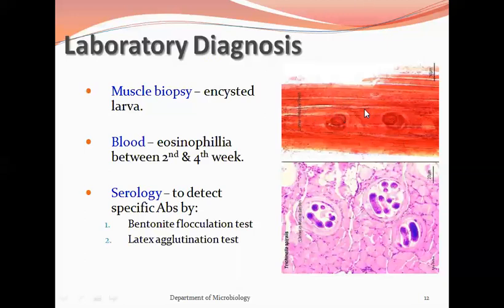A picture of such muscle tissue stained with safranin can be observed. Non-specific investigations include blood examination to look for eosinophilia between the second and fourth week. Serology can be done to detect specific antibodies. A patient history looking for consumption of raw or inadequately cooked pork in the recent days is helpful. Radiological examination can look for calcified cysts on X-rays, and stool examination may sometimes demonstrate adult worms and larvae.